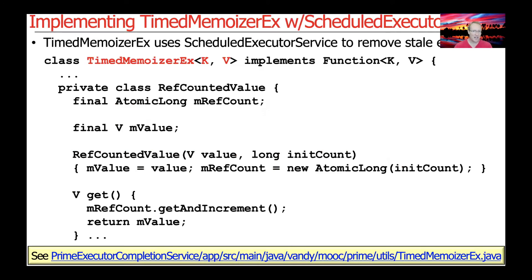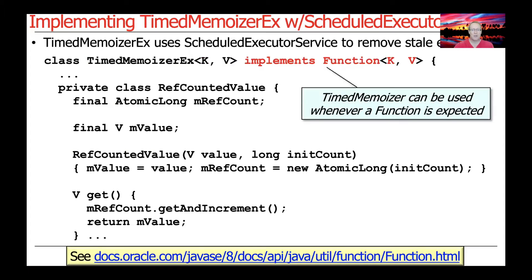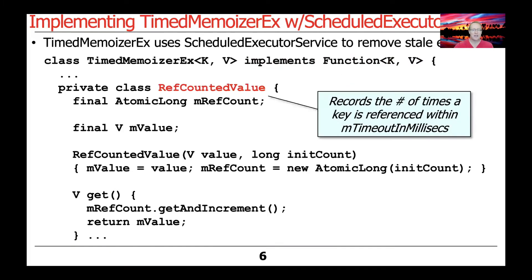As before, it's a generic class with generic key-value pair parameters. It implements Function so that Timed Memoizer EX can be used wherever a function is expected. It also has a RefCountedValue nested class, but this particular class is going to be implemented slightly differently than the one we showed before when we talked about Timed Memoizer.